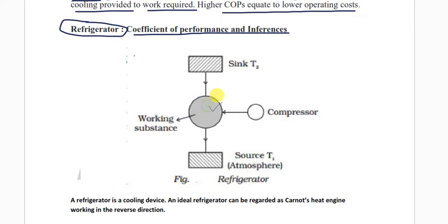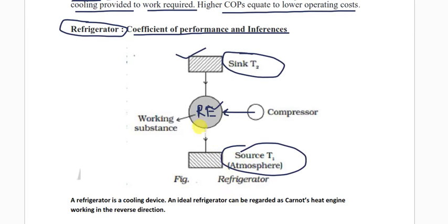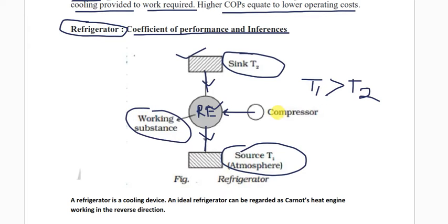Consider a refrigerator diagram. This is your refrigerator and here we are doing work on it. Inside the refrigerator, we are doing some work. The upper part is your heat sink and this is your heat source. The heat source is receiving energy from the heat sink. Here T1 is greater than T2 — we are transferring heat from lower temperature to higher temperature. This is the working substance and the compressor.